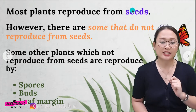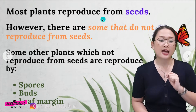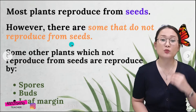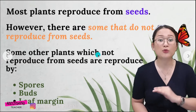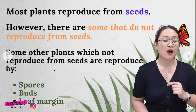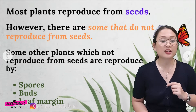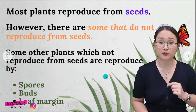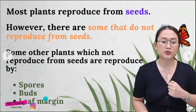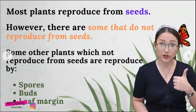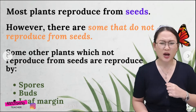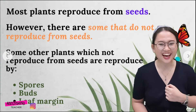Most plants reproduce from seeds. Most flowering plants produce seeds. However, there are some plants that do not reproduce from seeds. Some other plants reproduce by spores, by buds, and also by leaf margin. Let's check these out.